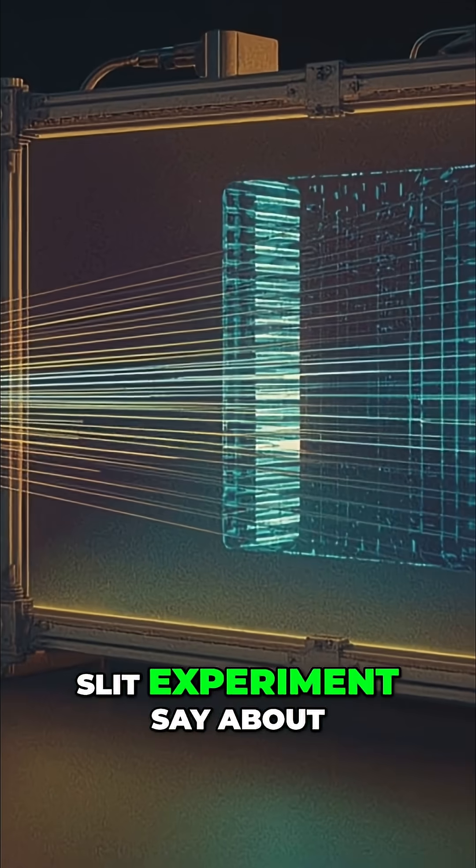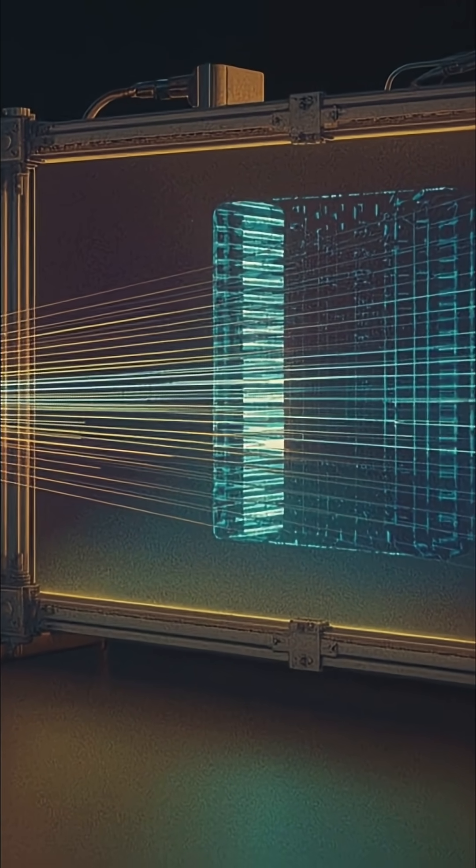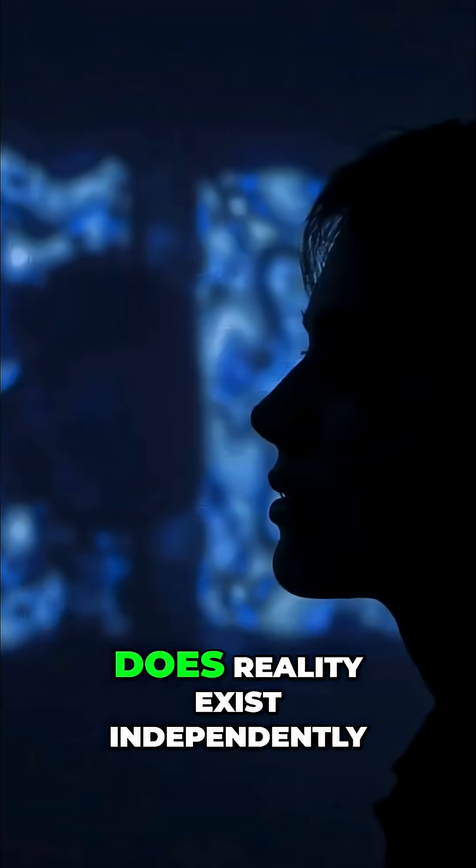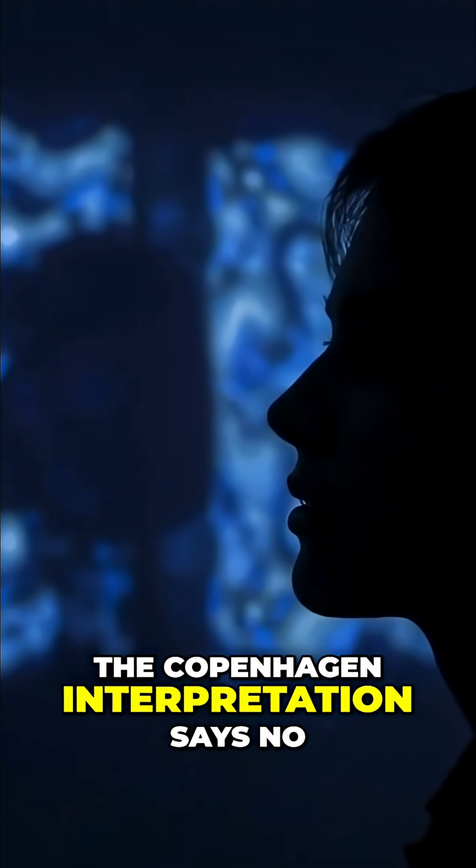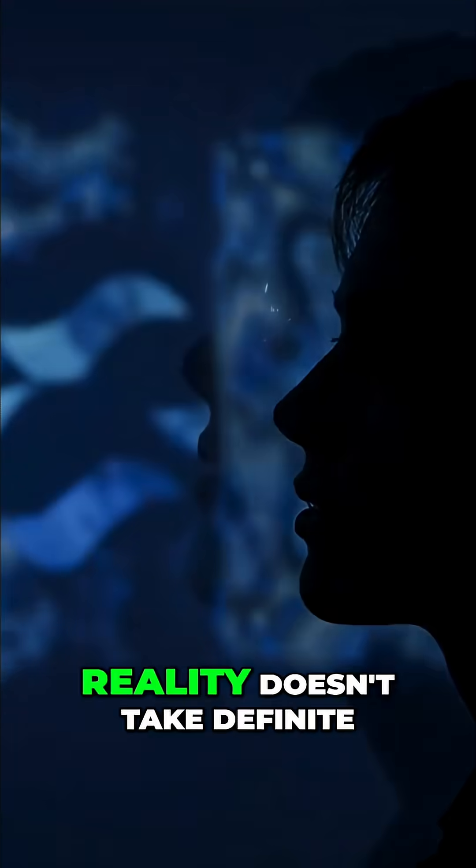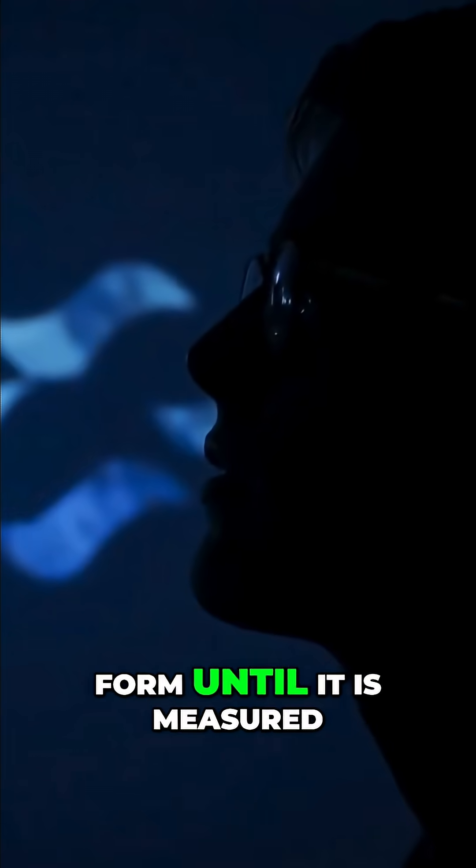What does the double-slit experiment say about the nature of reality? Does reality exist independently of observation? The Copenhagen interpretation says no. Reality doesn't take definite form until it is measured.